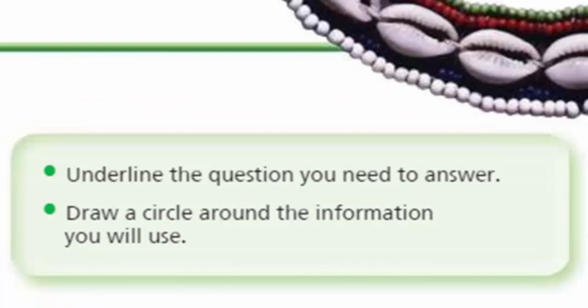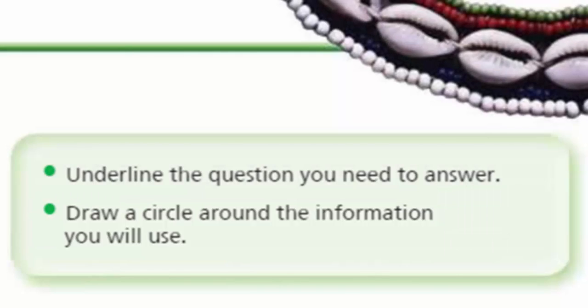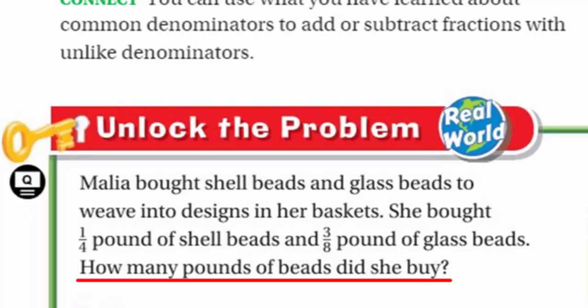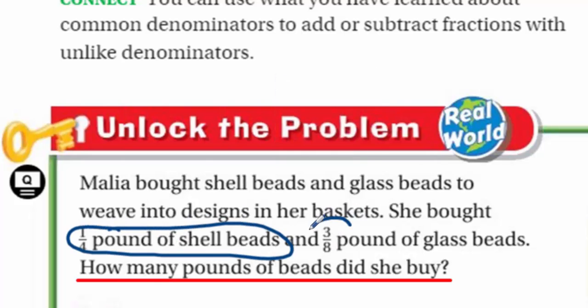I'm always impressed with those people that can make all those beautiful kind of ornaments and bracelets. It says she bought one quarter pound of shell beads and three-eighths pound of glass beads. How many pounds of beads did she buy? Well, we come over here and it says, first thing it says, underline the question you need to answer.